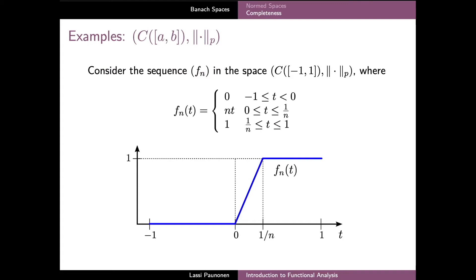We now consider examples of spaces of functions, beginning with the space of continuous functions on a closed interval equipped with the p-norm, defined using the integral as in previous videos. Our aim is to prove that this space is not a Banach space, which we do by constructing a Cauchy sequence that does not converge to any limit inside the space.